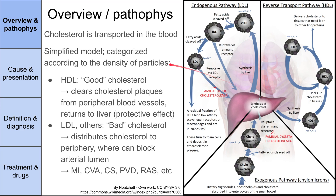All of that's pretty complicated, but here's a simplified model. Cholesterol is transported in the blood via lipoproteins, categorized according to their density. There are high-density lipoproteins — HDL — commonly called the good cholesterol. This is the reverse transport pathway. The good cholesterol is good because it clears cholesterol plaques from peripheral blood vessels and returns the cholesterol to the liver. So it has a protective effect and reduces atherosclerosis.